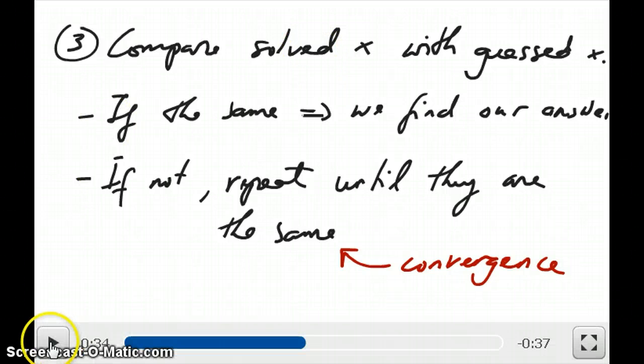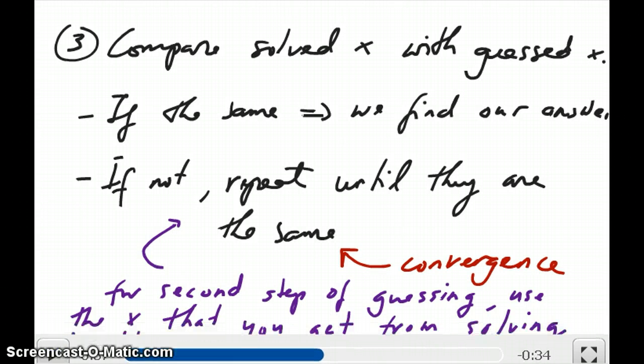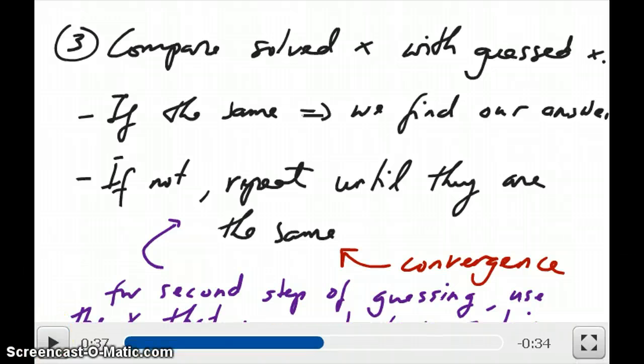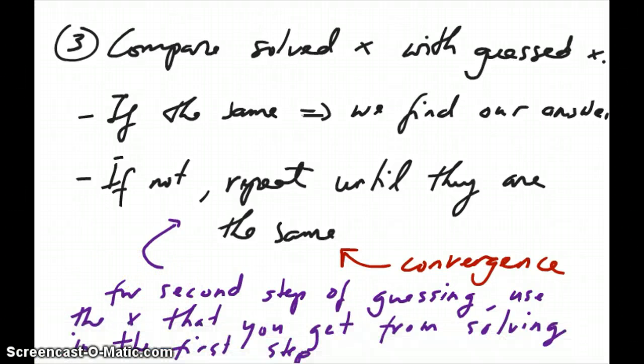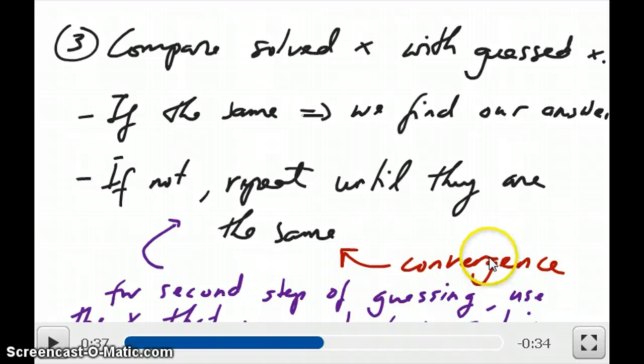Let's do a quick example on this and this is from the Zumdal textbook. And like I said earlier before we actually go to the example, that if you don't get the same answer, you have to keep repeating this step until you get the same answer for the guess and the solve value of x. This is what we refer to as convergence.